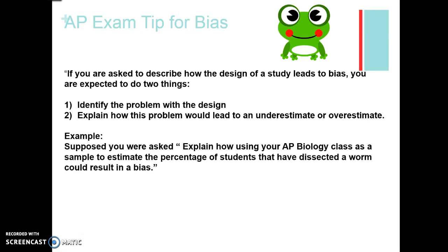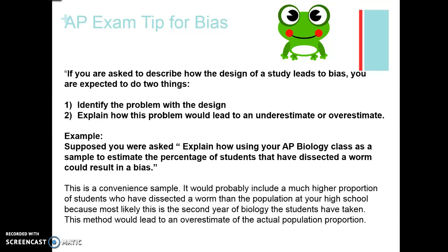Let's look at an example. Say you're in biology class and asked to explain how using your biology class as a sample to estimate the percentage of students that have dissected a worm could result in bias. This is a convenient sample — since you're asking people in biology class, it probably includes a much higher proportion of students who have dissected a worm than the population of your high school. AP biology is often a second-year course, so most likely everyone would have dissected a worm.